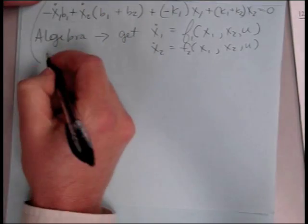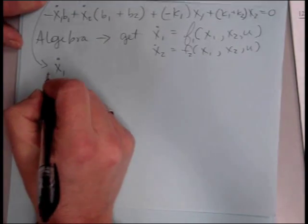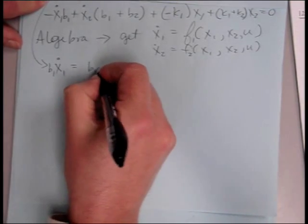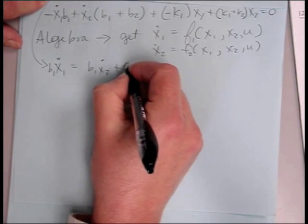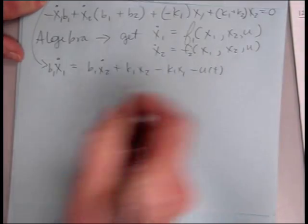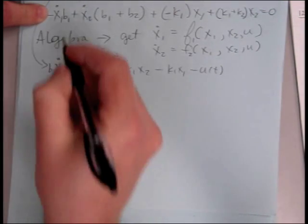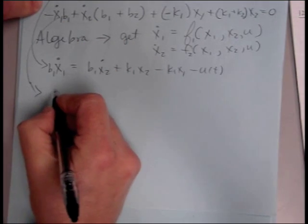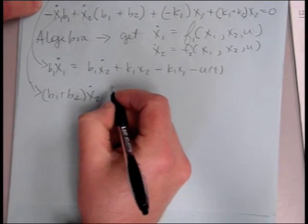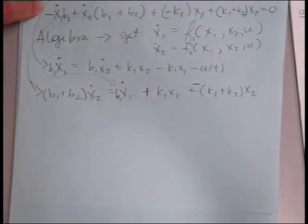We need to get x1 dot equals something, f of x1 and x2 and u, with no derivatives of x1 or x2. So let's play with these just a little bit. One way to do it would be to solve this for x1 dot. So let's solve it for b1 x1 dot equals b1 x2 dot plus k1 x2 minus k1 x1 minus u of t. And so let's also solve the second equation for x2 dot, or b1 plus b2 x2 dot equals.